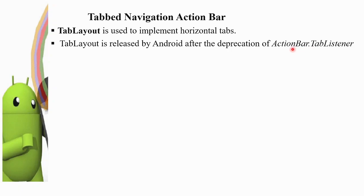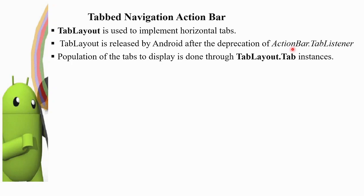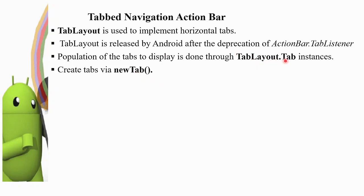Previously we used the action bar in the toolbar and interfaced with the TabListener using AddTabs. Now we use TabLayout instead. Population of the tabs to display is done through TabLayout.tab. When you add a TabLayout, TabLayout.tab is called. We can create tabs via newTab and add tabs.